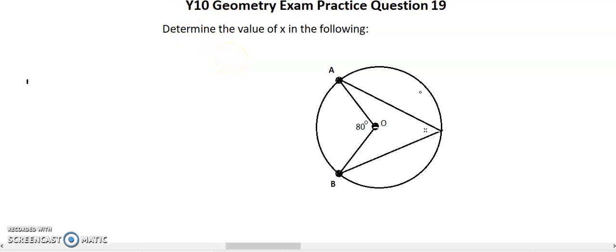One of the rules of a circle shows us that we know that this area of our x has to be 40 degrees.